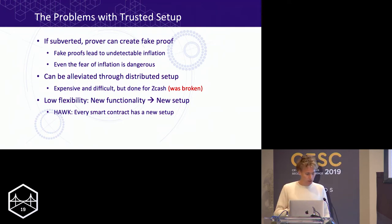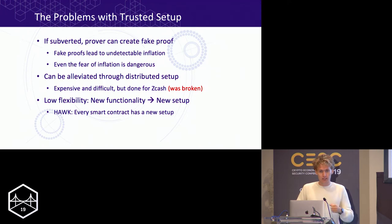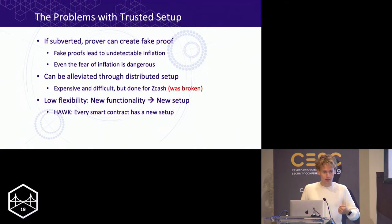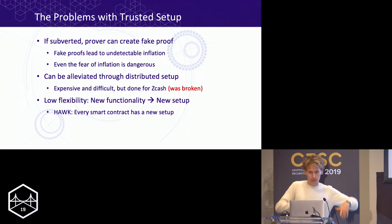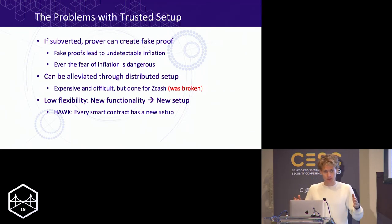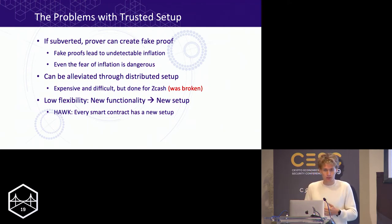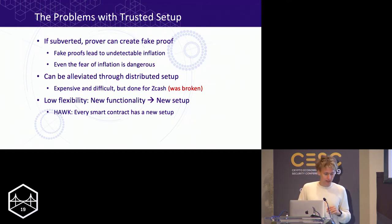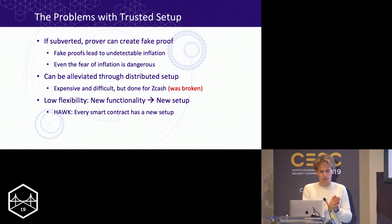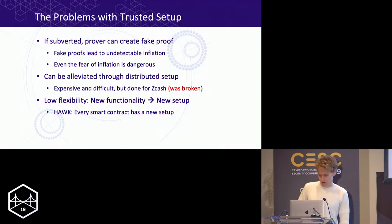Another problem with older SNARKs is that every time you want to create a SNARK for new functionality, you need a new trusted setup. There was a proposal called Hawk where every smart contract is private, but every single smart contract needed a new trusted setup, and if any one of them is broken, we have a problem. So what we introduced today is a SNARK called Supersonic that has all the good properties of SNARKs but does not require a trusted setup.